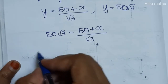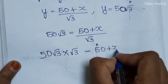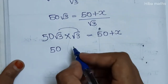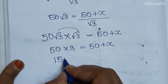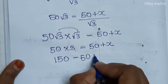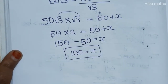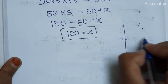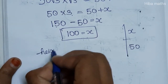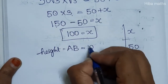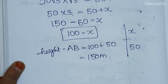Cross multiplying: 50 root 3 into root 3 = 50 + x. So 50 × 3 = 50 + x, giving 150 = 50 + x. Therefore x = 150 − 50 = 100. So x = 100 meters. The total height AB = 50 + x = 50 + 100 = 150 meters. Since 150 meters is greater than 120 meters, the tower meets the radiation norm.